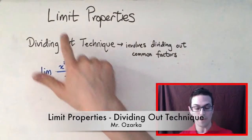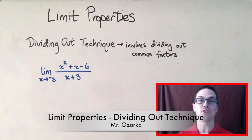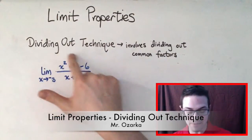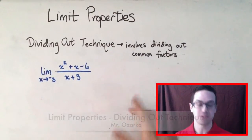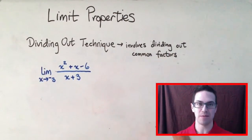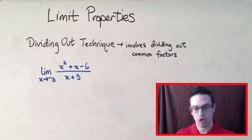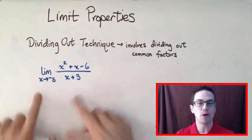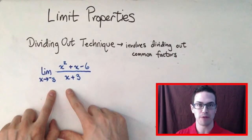This is going to be another video about limit properties, only this time we're going to be talking about the dividing out technique. The dividing out technique basically involves dividing out common factors. I'm going to show you why using an example right here.